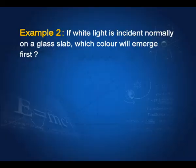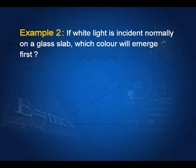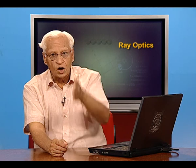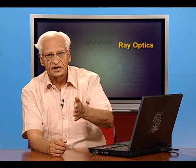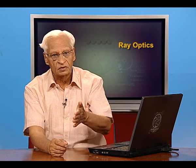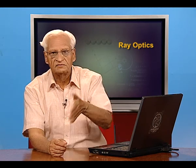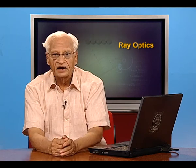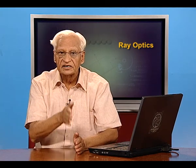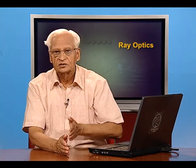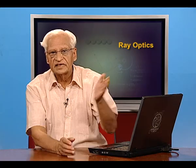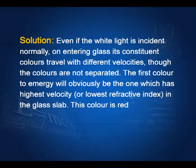Example 2: if white light is incident normally on a glass slab, which color will emerge first? The light is entering normally, meaning the angle of incidence is 0 for all colors. However, they travel with different speeds through the glass, and we have seen that the speed of red is maximum. Therefore, the red color will come out first.